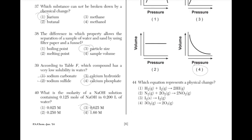Which equation represents a physical change? The answer is choice 3 because on the reactant side of the equation, I2 is a solid, but on the product side it's a gas. All the other answer choices show chemical reactions where elements are combined.